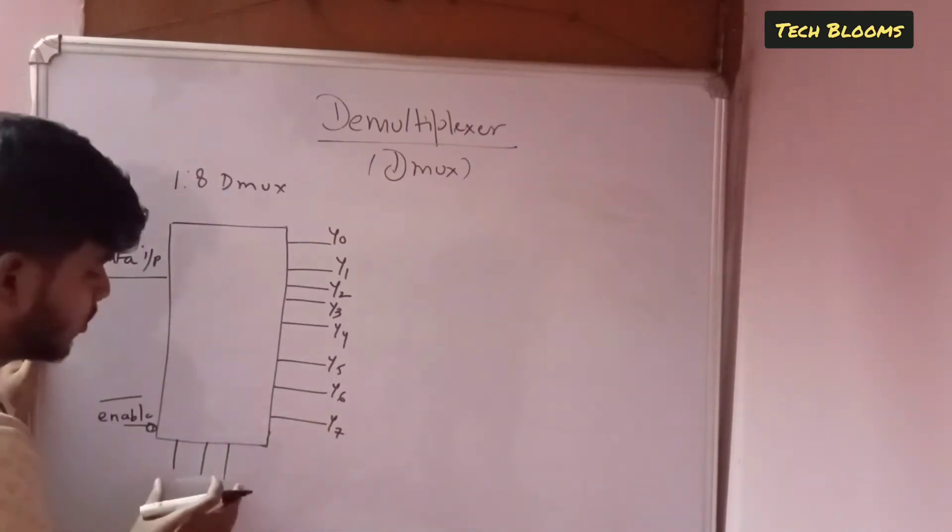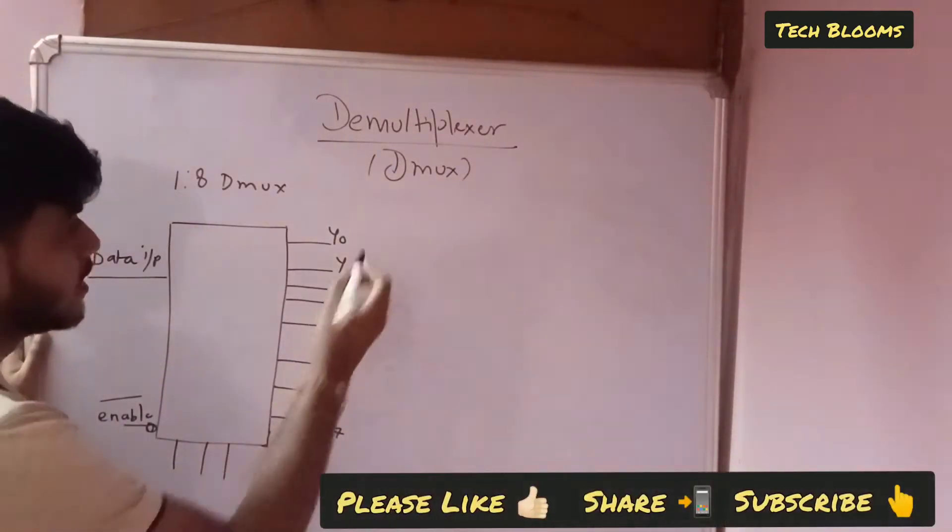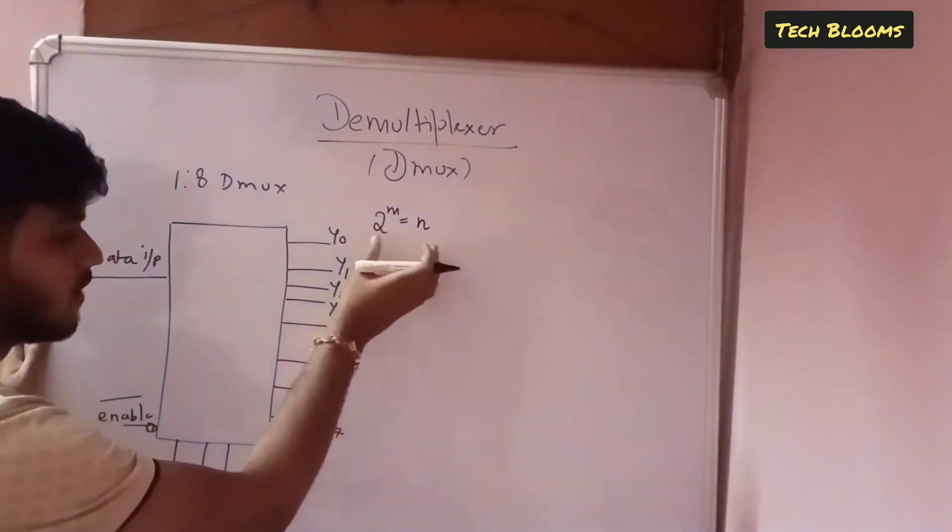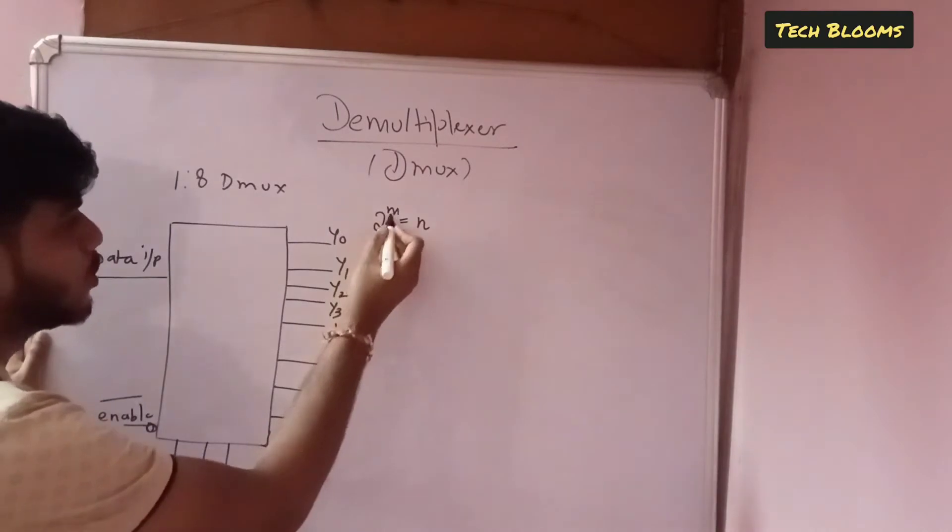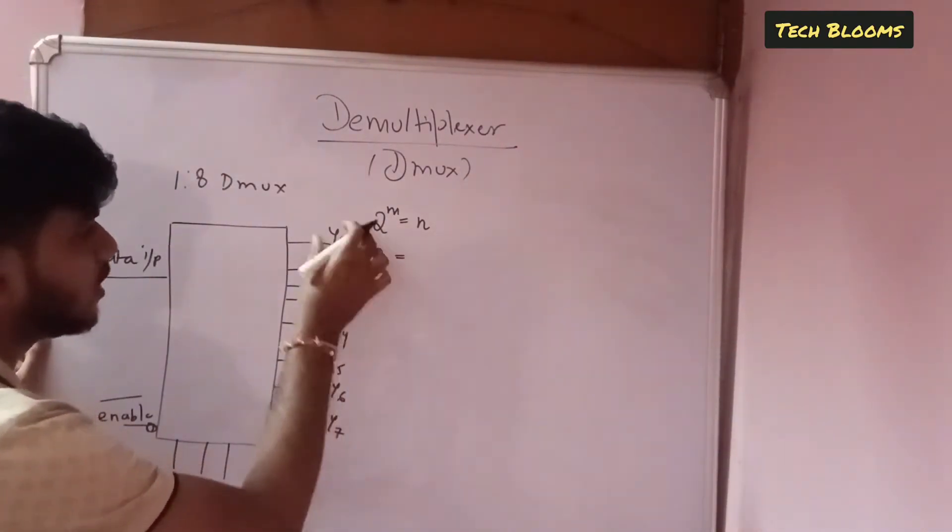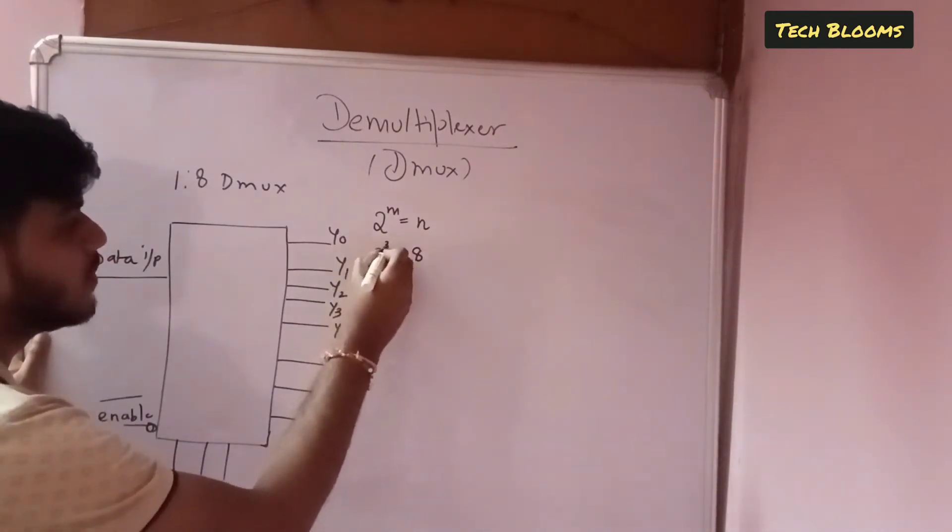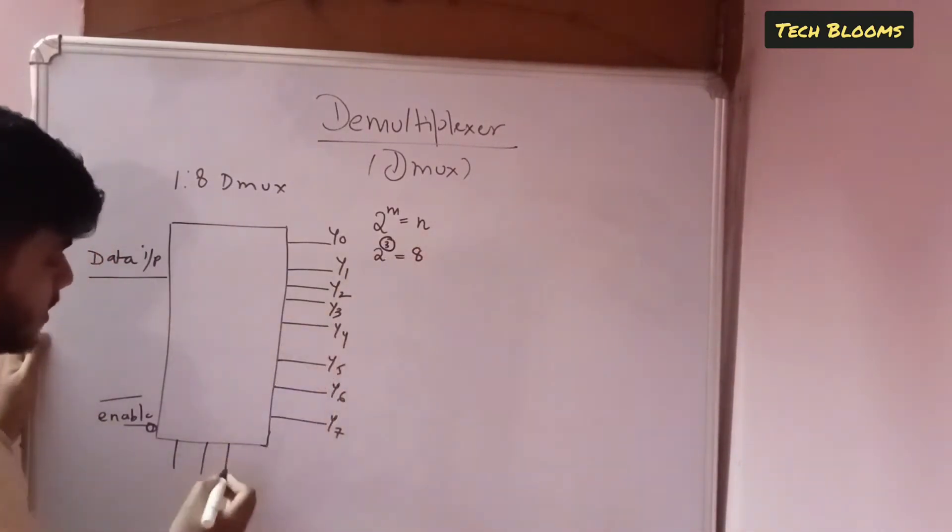Now how to select the how to mark the select lines. So as in case 2 raise to m is equal to n is the formula where you can mark the select lines. So 2 raise to m is equal to what is the output? Outputs are basically 8. So 2 raise to 3 will be your 8. So 3 is your select line.